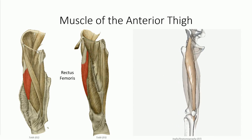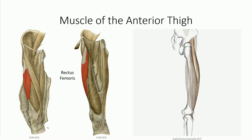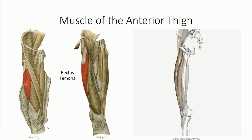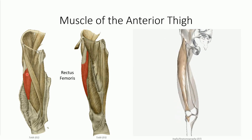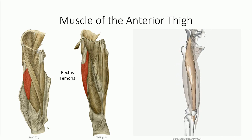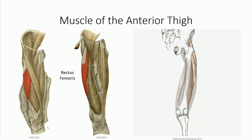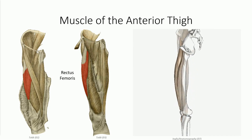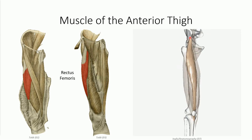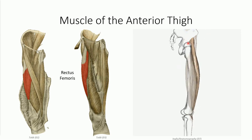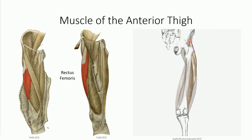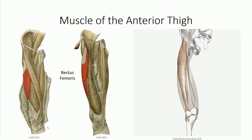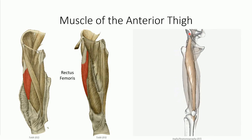Getting back to the quadriceps femoris muscle, the most distinct of the four heads is the rectus femoris. Of the four heads, rectus femoris is the only one to cross both the hip and knee, originating off the anterior inferior iliac spine, just above the superior ridge of the acetabulum. As such, it also contributes to hip flexion.